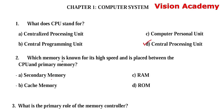Question number 2: Which memory is known for its high speed and is placed between the CPU and primary memory? Option A: Secondary Memory. Option B: Cache Memory. Option C: RAM. Option D: ROM. The right answer is Option B, Cache Memory.